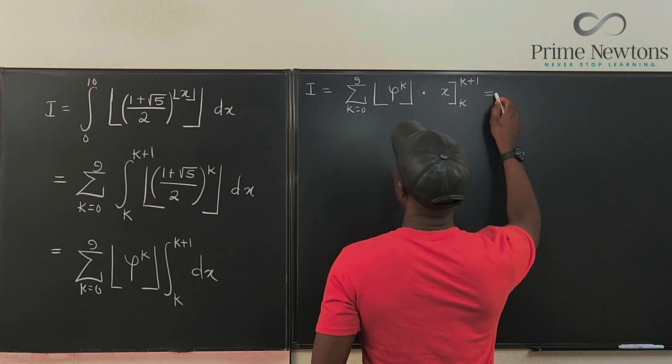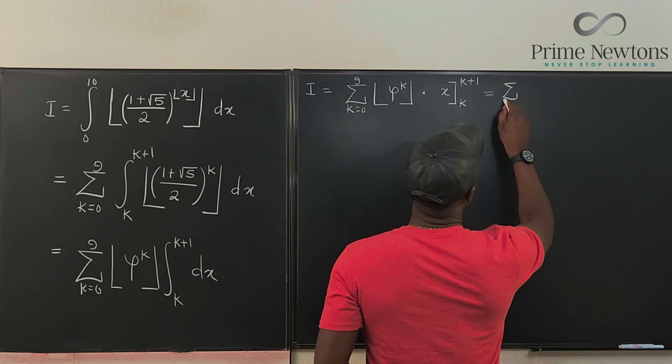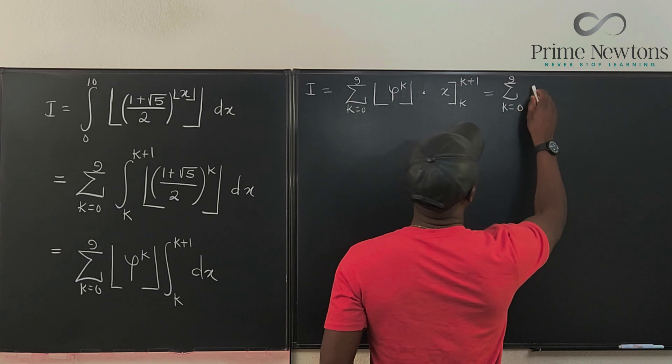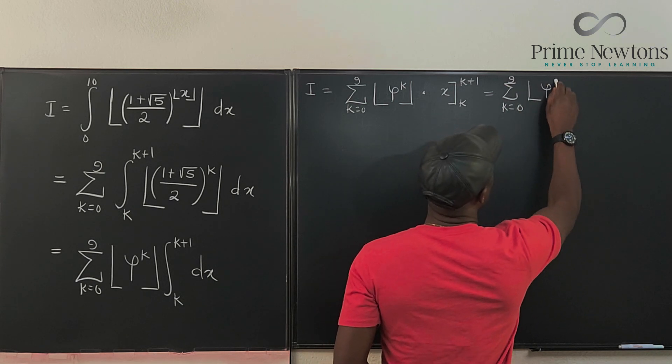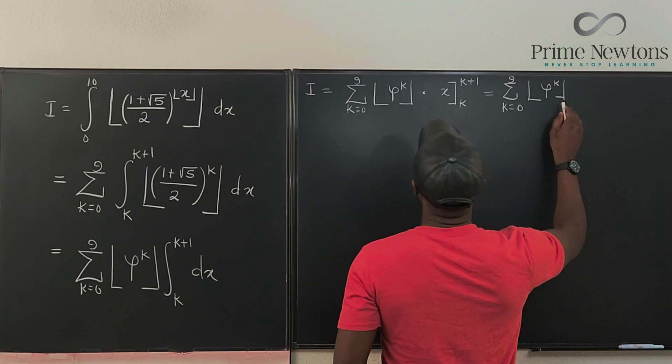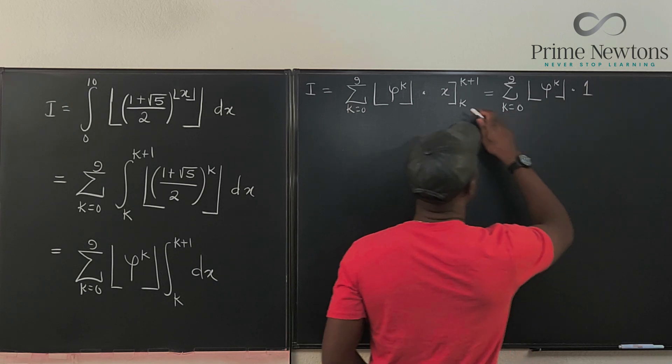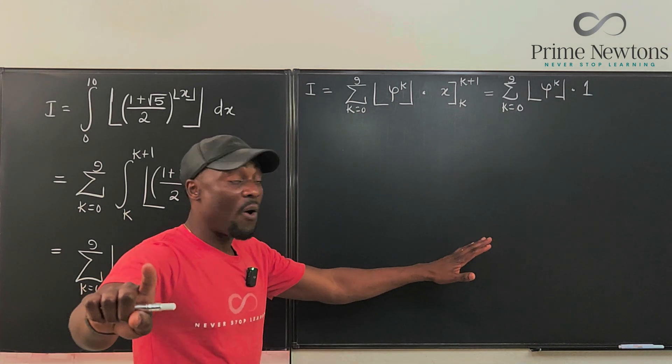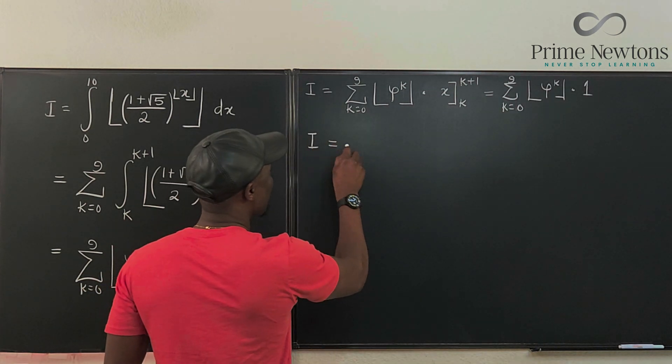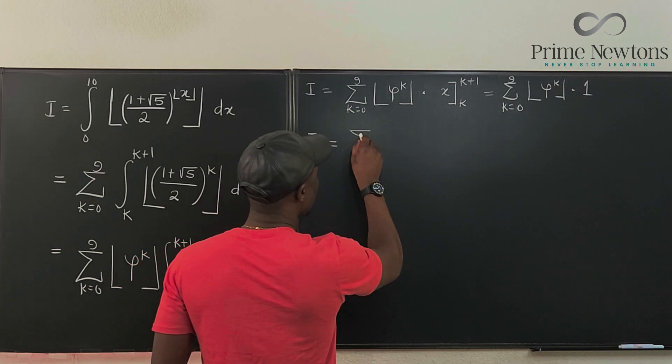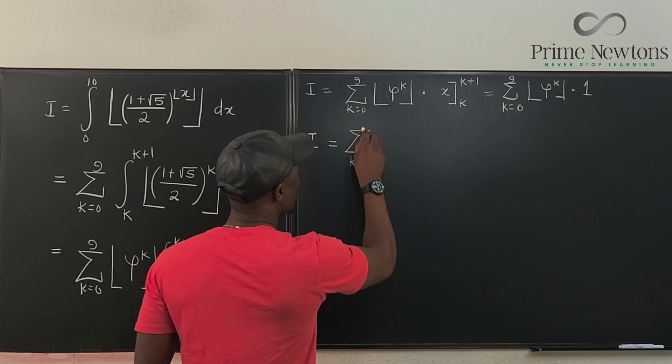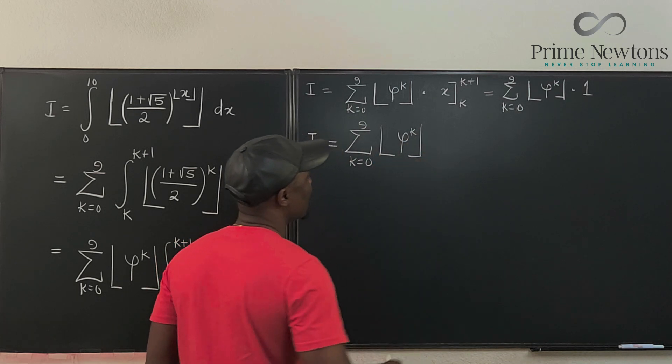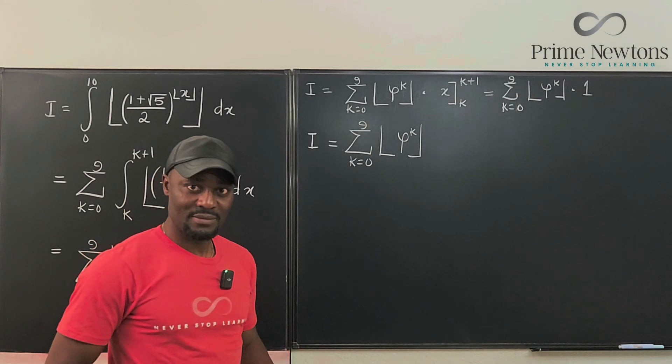That's going to be the sum from K equals zero to nine of the floor of Phi to the K times one, because that's what this evaluation is going to be. Now we know that I is basically the sum from K equals zero to nine of this expression Phi to the K.